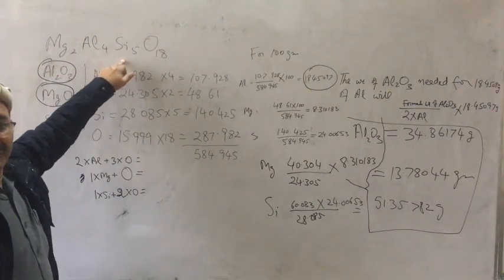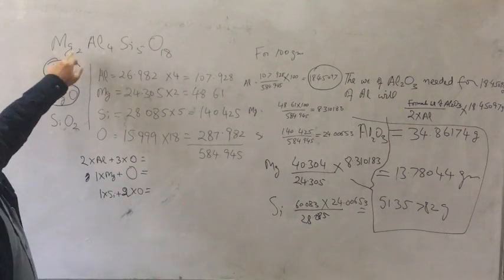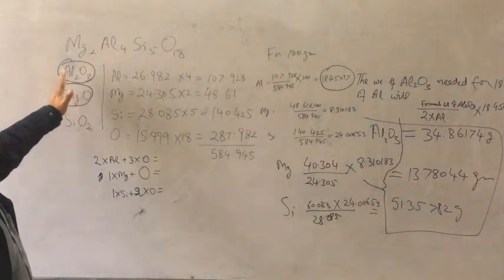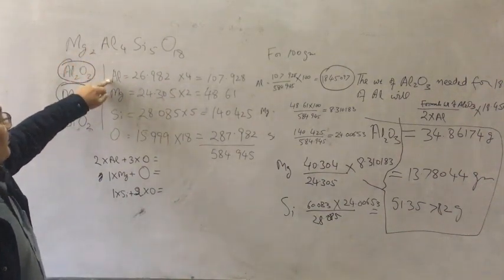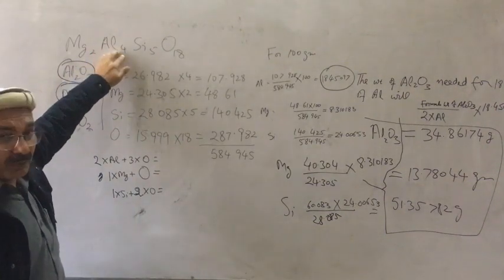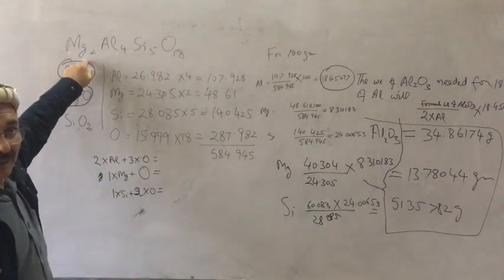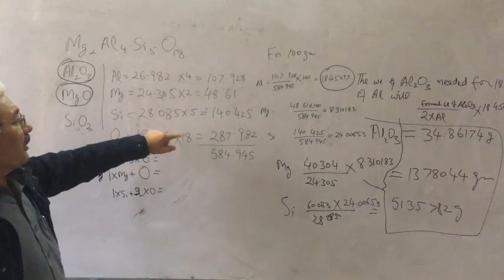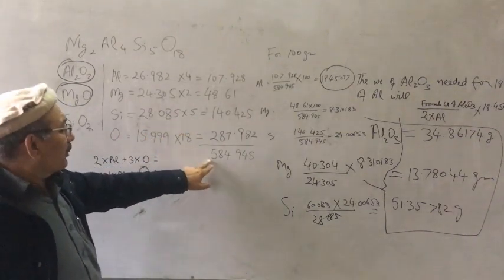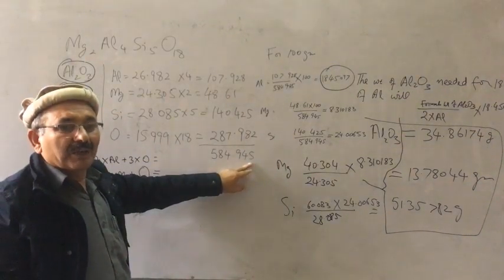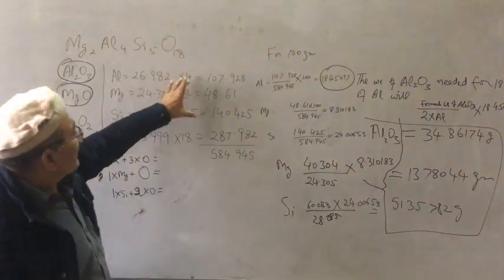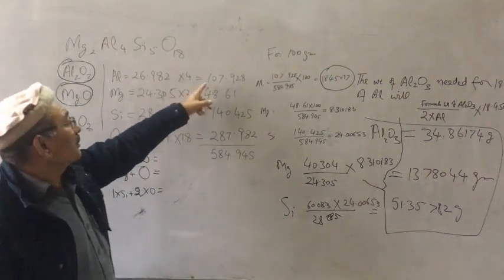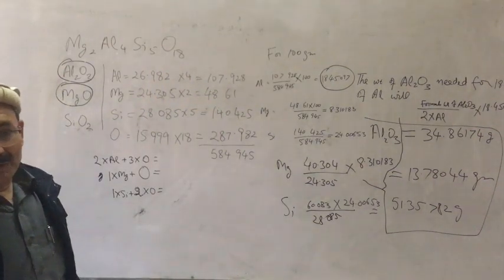So, again, look at it: you need cordierite. Cordierite composition is Mg₂Al₄Si₅O₁₈. How much aluminum, how much magnesium, how much silicon is there? Aluminum is 4 times the atomic weight of aluminum in this formula; magnesium is 2 times the atomic weight of magnesium; silicon is 5 times the atomic weight of silicon. So I knew that if I want to make 584.945 grams of cordierite, I need these amounts — if I have them in elemental form.